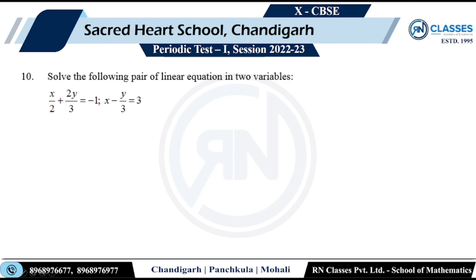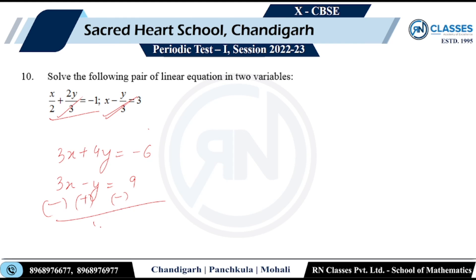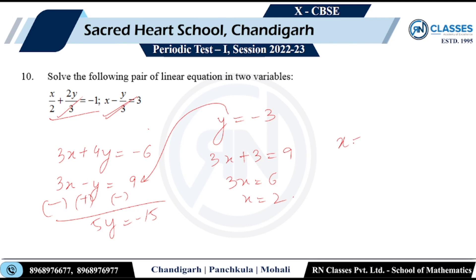Solve the following pair of linear equations with fractions. Multiply the first equation by 6: 3x + 4y = -6. Multiply the second by 3: 3x - y = 9. Subtracting: 5y = -15, so y = -3. Substituting back: 3x - (-3) = 9, so 3x = 6, x = 2. The solution is x = 2 and y = -3.